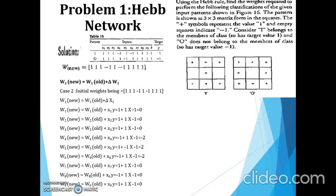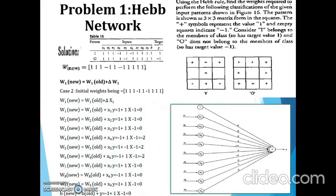Now we have the updated weights after handling both samples. We can draw the neural network with the updated weights. The bias is also 0 (initialized 0 + 1·(-1) = 0), so no need for a bias. This is the output Hebb network. All inputs x1 to x9 carry weights; the locations x4 and x6 play a vital role in recognizing character 'i' from 'o'. Where we don't need data (empty in 'i'), those locations contain the value -2; where data is needed for 'i' but absent in 'o', the value is +2.